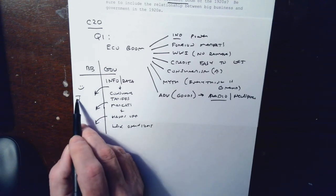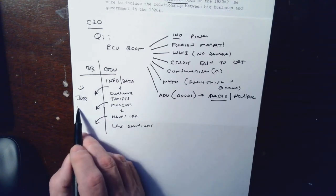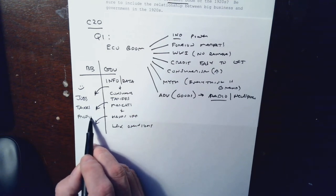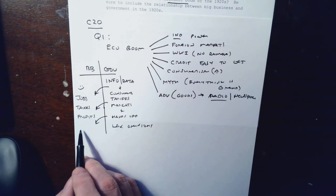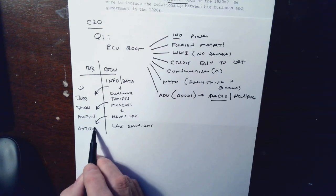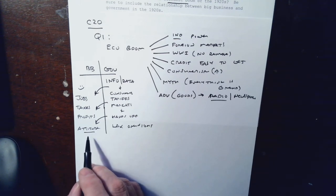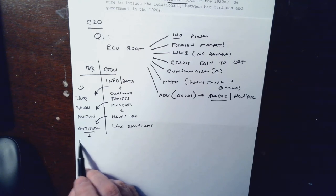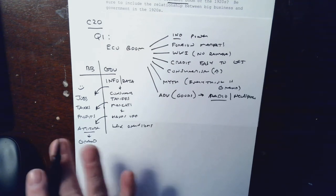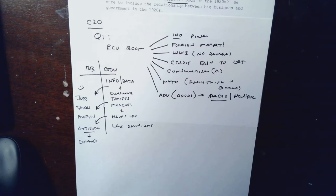All of this is done to support big business because big business generates jobs, taxes, and profits. In many ways, big business creates consumerism — an attitude that everything is grand based on this consumption. That takes care of question one for Chapter 20.